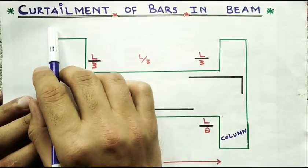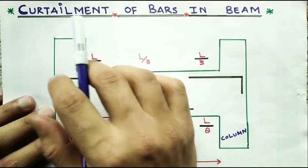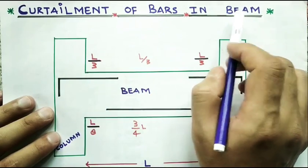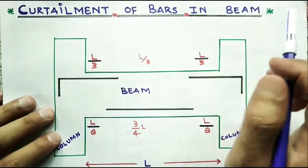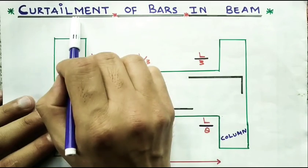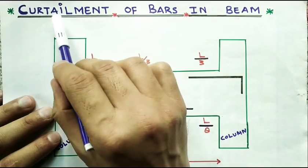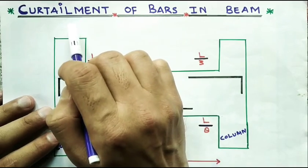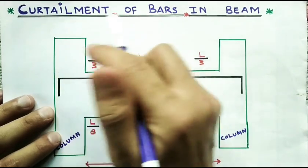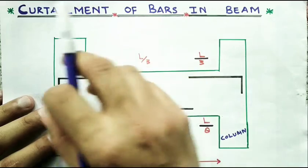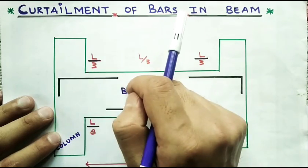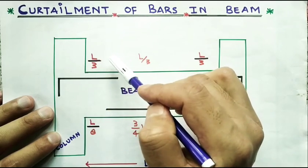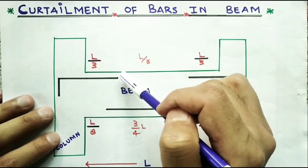Hello friends, welcome back to Mr. Civil Engineer. Today we are going to discuss about cut element of bars in beam. First of all we need to understand what exactly cut element means. What happens in beams where we cut steel bars — we call this cut element. So what we cut and how much length we cut, we discuss today.